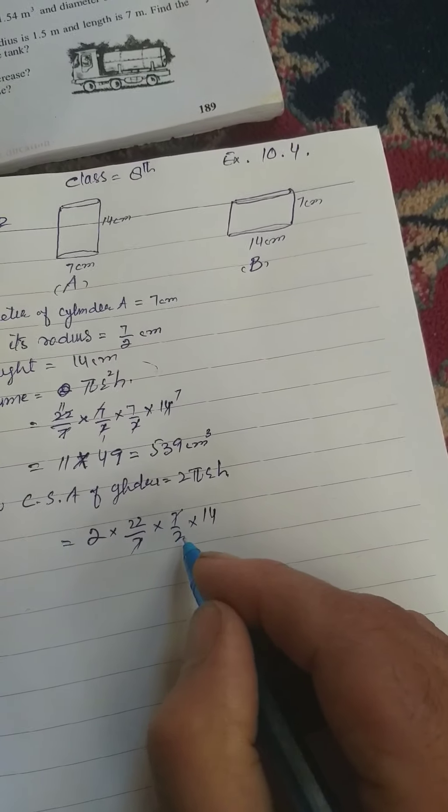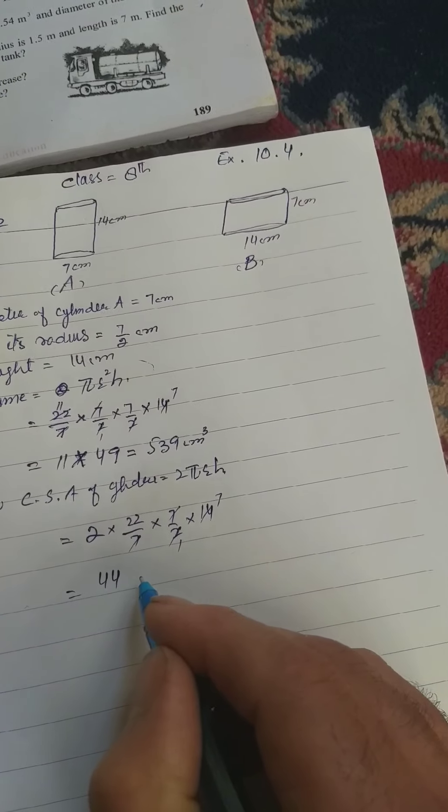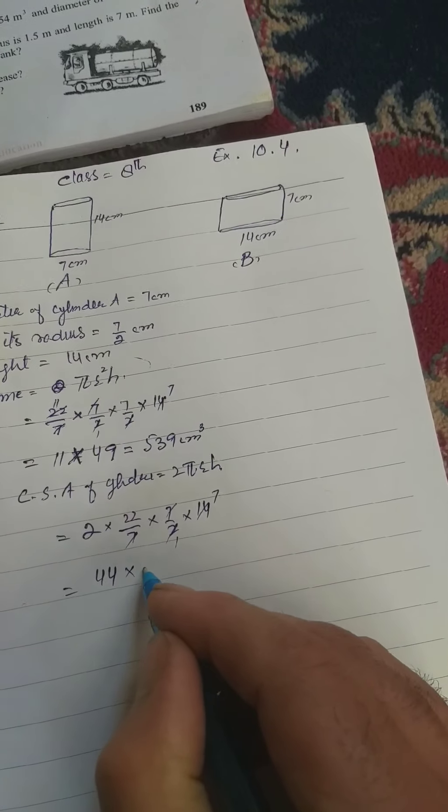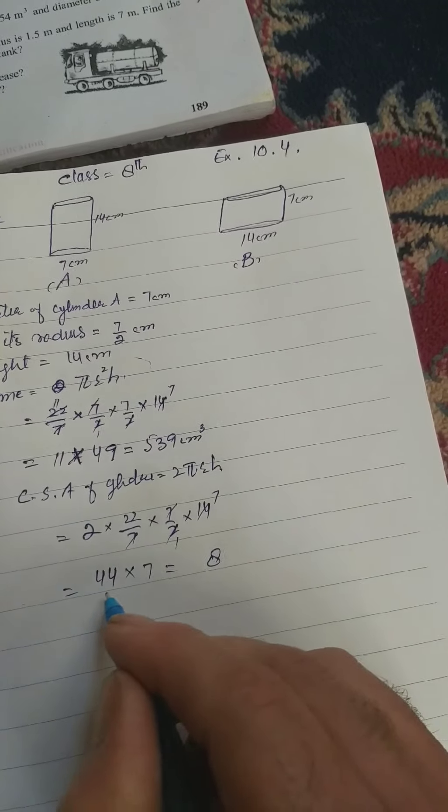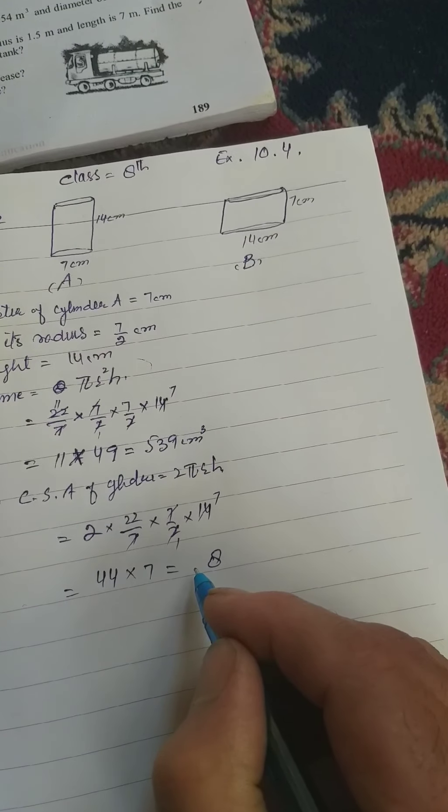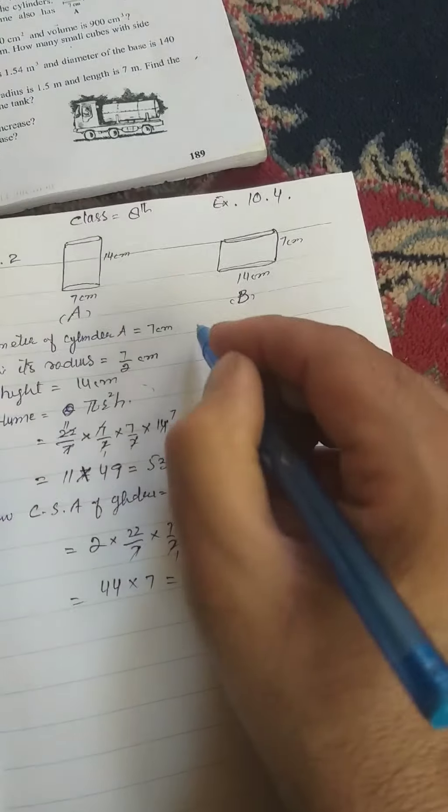7, 7, 7 cancel, 2, 1s are 2, 2, 7s are 14, that is equal to 44. 2, 2s are 4, 2, 2 into 7. 7, 4s are 28, 7, 4s are 28 and 30, 308 square centimeter is curved surface area.